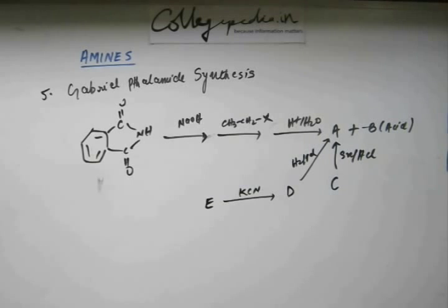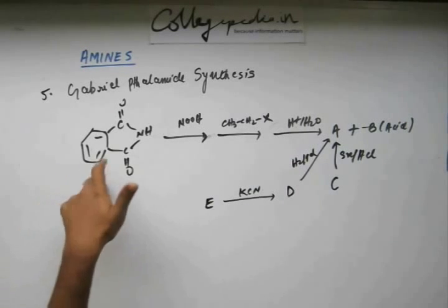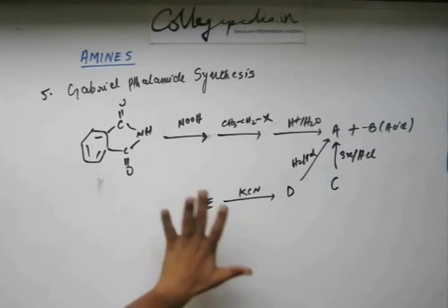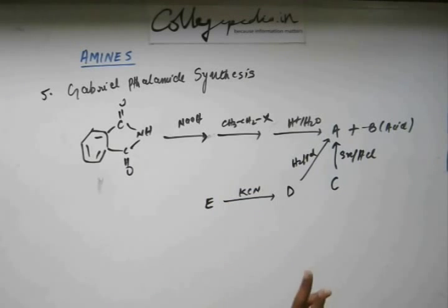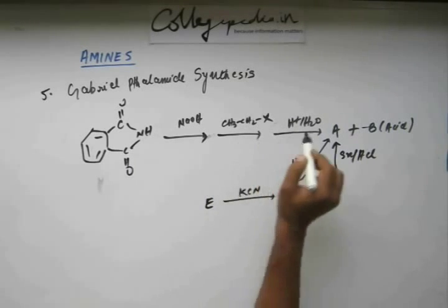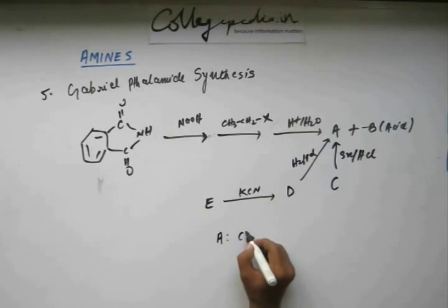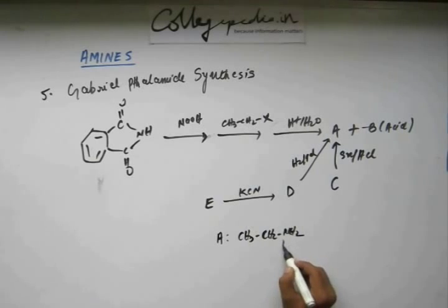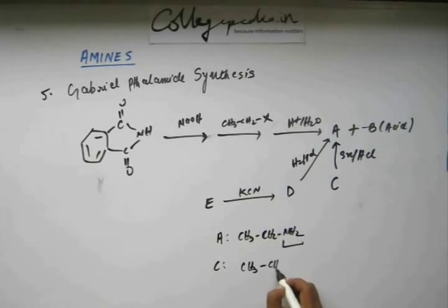So it's easy. The reaction that we have, this conversion involved the very recent reaction that we have studied in this chapter. This is Gabriel phthalimide synthesis. A and B—B is an acid, so B is phthalic acid that you are going to get after hydrolysis, and A is going to be ethaneamine. So there's no problem in identifying that A is ethaneamine. Now A we can also get from C. On reduction you are getting amine. Whose reduction should you do? We have studied that on reducing nitro compound you get amine, so C must be nitroethane.